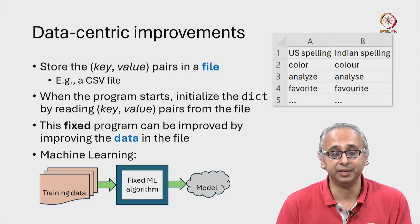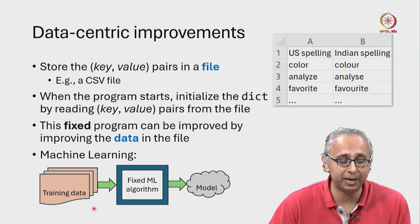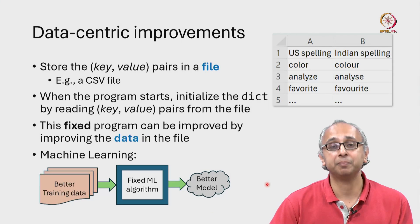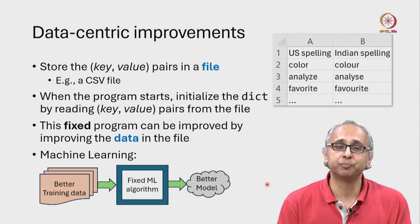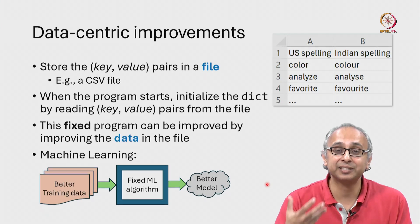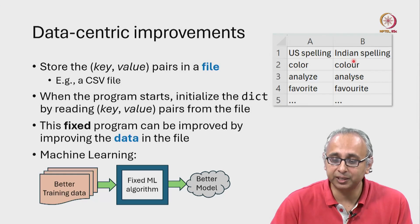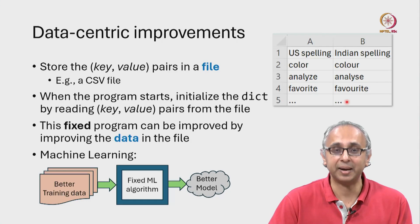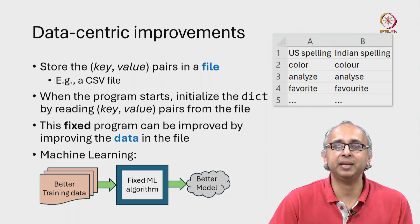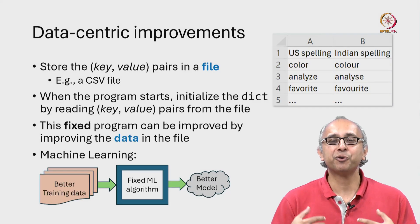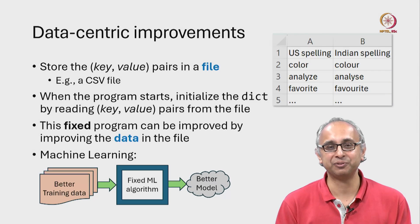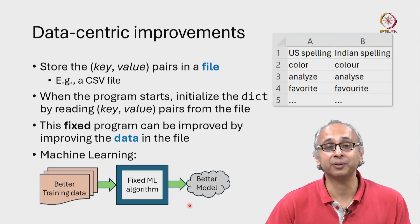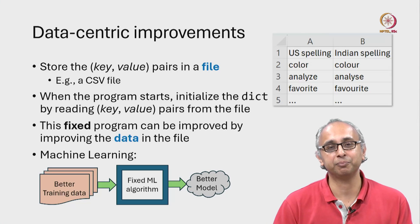The whole point is that if we are able to give this pipeline better data, it will produce a better model. So data-centric improvements are a very, very important category of improvements. In this particular example, we can improve our program with this data-centric mindset. Many, many programming courses, including this one, focus heavily on algorithm-centric improvements. But we can take this data-centric mindset — one that has proved very successful in the modern age — and use it to further improve our code. Look out for such opportunities in the code that you write.